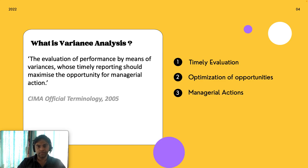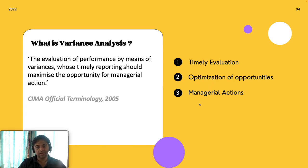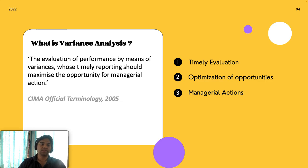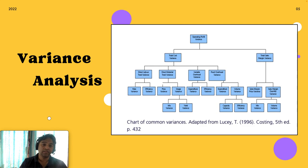With the definitions of standard costing and variance analysis covered, we now have a basic understanding of what each term means. Moving forward, let's look at what variance analysis actually involves — specifically, the different types of variances that can be calculated, since variance analysis can be done in multiple ways as a breakdown of the standard-versus-actual comparison to identify what caused the differences.